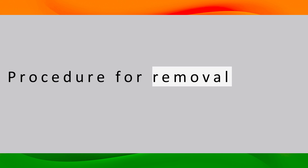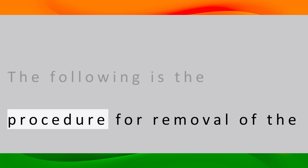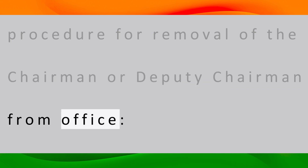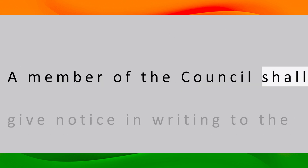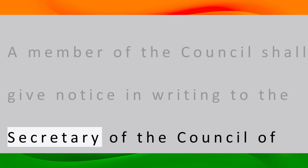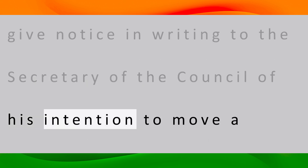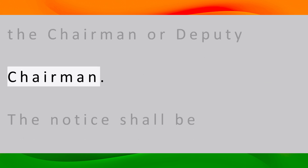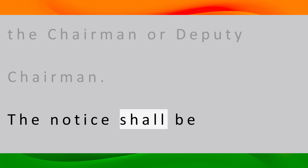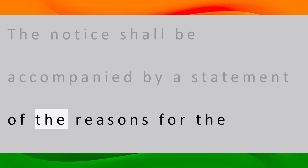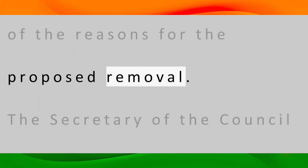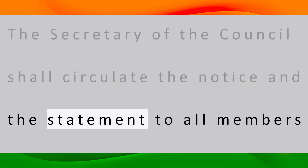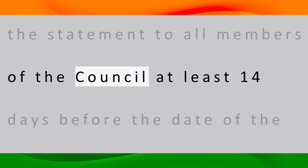Procedure for Removal: A member of the Council shall give notice in writing to the Secretary of the Council of his intention to move a resolution for the removal of the Chairman or Deputy Chairman. The notice shall be accompanied by a statement of the reasons for the proposed removal. The Secretary shall circulate the notice and statement to all members of the Council at least 14 days before the date of the meeting.